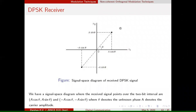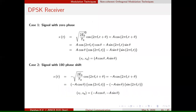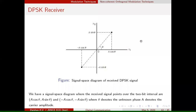Whatever signal is received, it will fall either in the first quadrant or the third quadrant — those are the only two possible cases. The signal may fall in the first quadrant or in the third quadrant, and only those two possibilities exist.